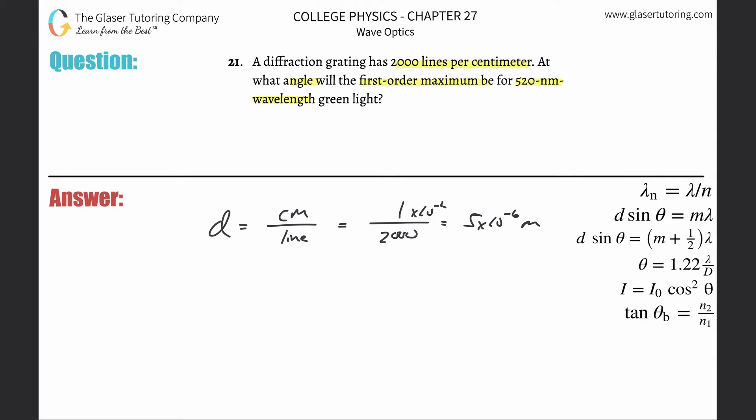Now, this goes back to maximum double slit interference patterns. We're using the formula over here. The distance between the slits multiplied by the sine of the angle is equal to the order multiplied by the wavelength.